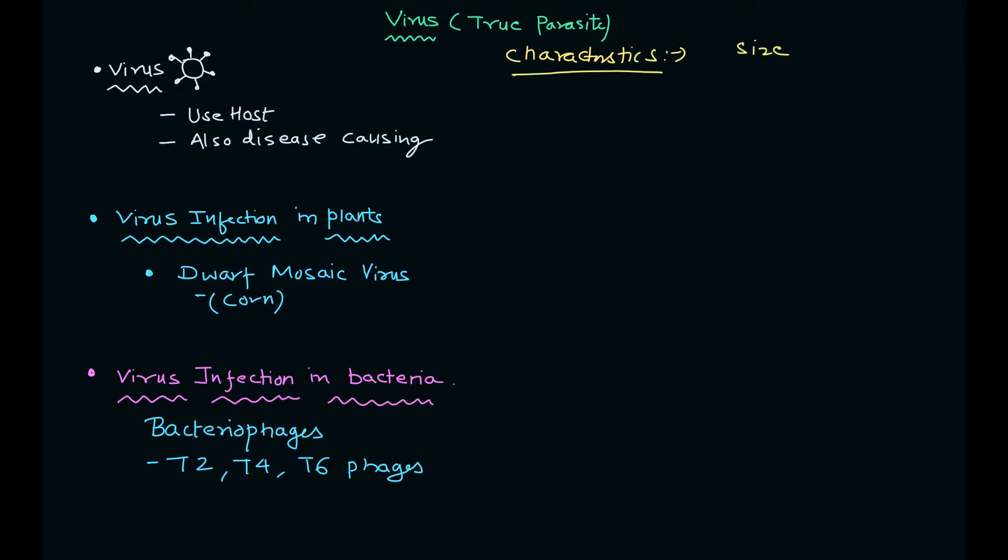Now let's discuss some of the important characteristics. What is the size? The diameter of a virus particle is around 100 nanometers. It has a protein coat, its genetic material is DNA or RNA, and if we discuss the cycle...